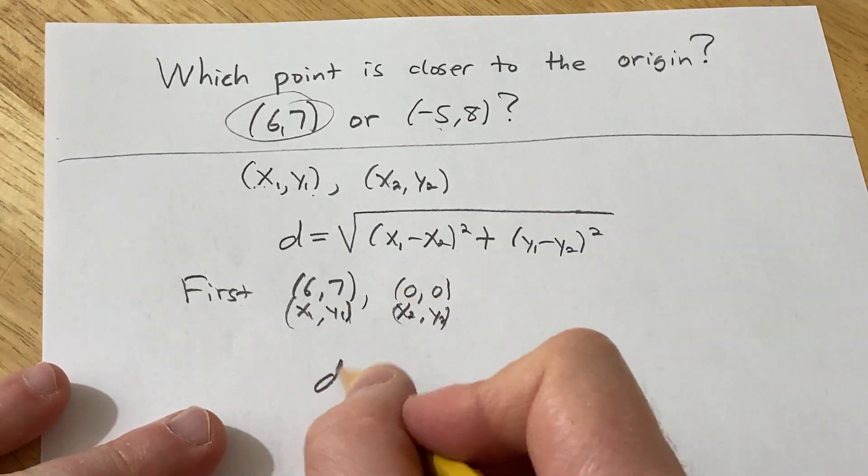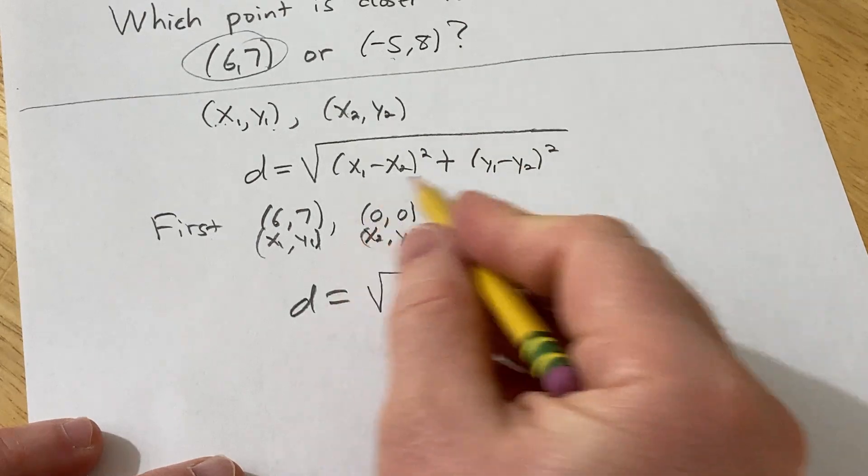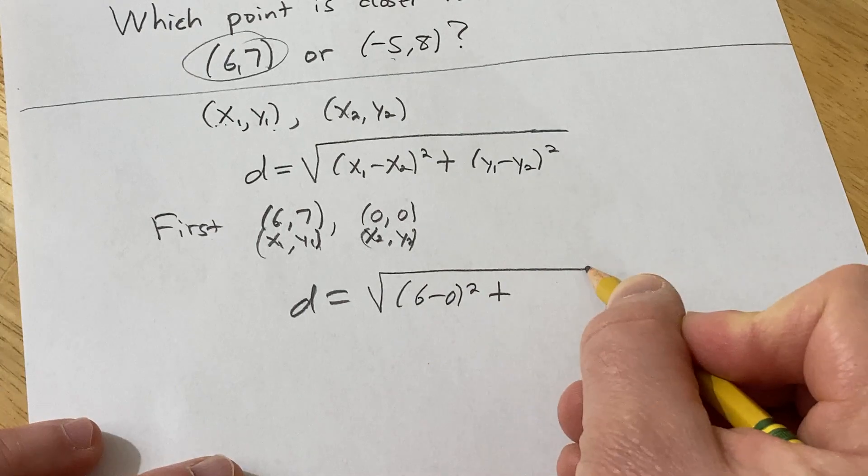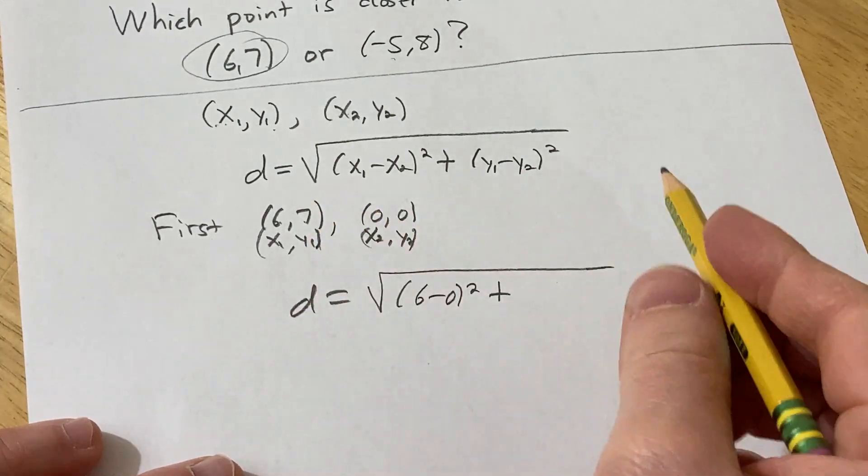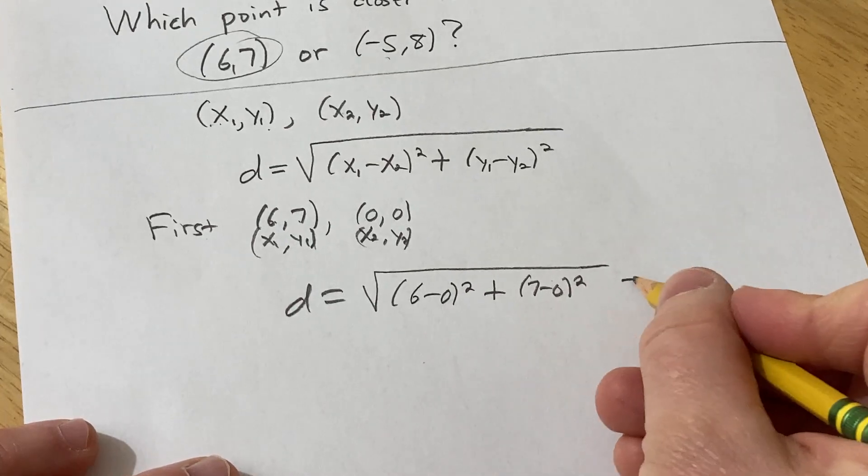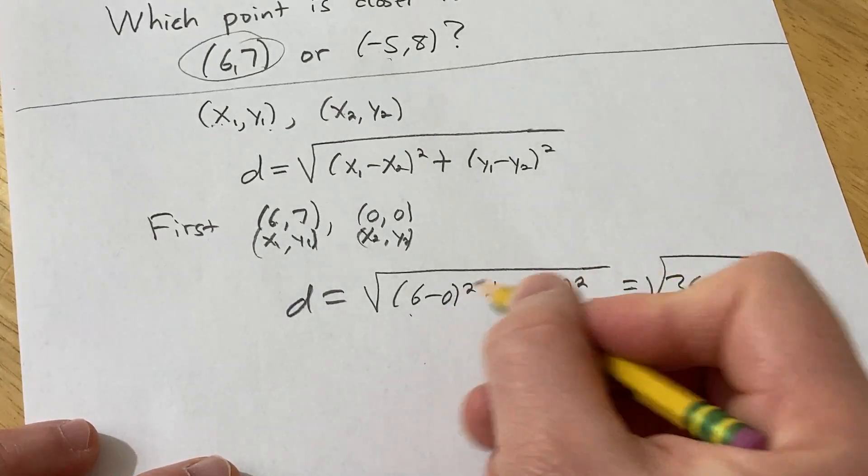Alright, so d in this case is going to be the square root of, so you subtract the x's, so 6 minus 0, squared plus, then you subtract the y's, 7 minus 0 squared. So that's equal to the square root of 36 plus 49, because 6 squared is 36.